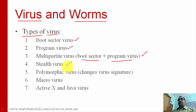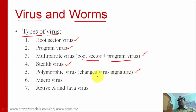A stealth virus tries to hide from antivirus software. Whenever the antivirus is scanning files, it hides itself — that's why it's called a stealth virus. A polymorphic virus tries to change its virus signature to hide from antivirus detection.